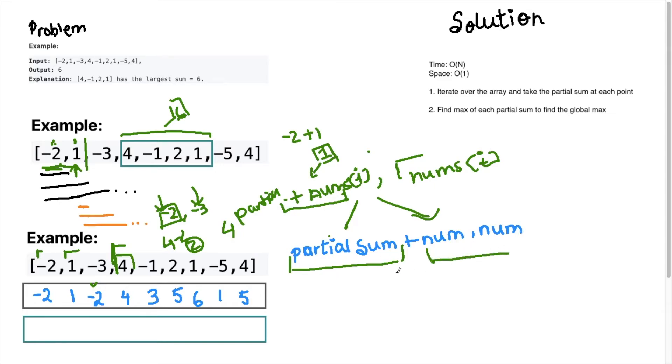Great. So let's say we have our partial sums. And now looking at these numbers, you can see that the global max is right here, six. Right? So it's pretty easy to see where the global max is. But if we were to do this at a single pass, how would we keep track of this six? So it's very easy. Just keep a global max variable.